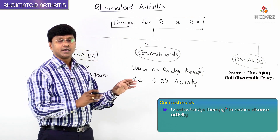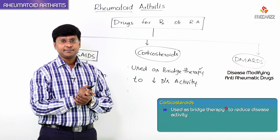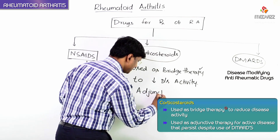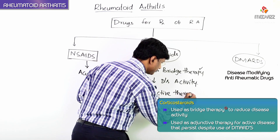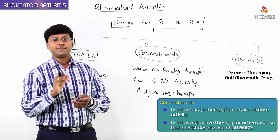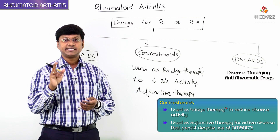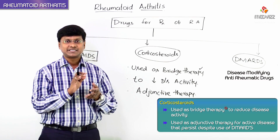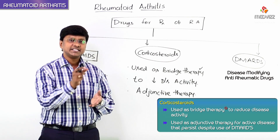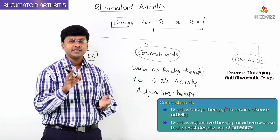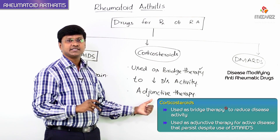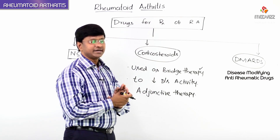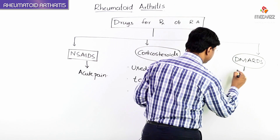Not only are corticosteroids used to bridge over the effect of DMARDs, but another important point is these drugs can also be used as adjunctive therapy for active disease that persists despite treatment with DMARDs. That means if you have started DMARDs and their effect has begun, but there is still some disease activity, corticosteroids will act as adjunctive therapy.